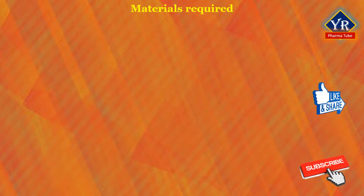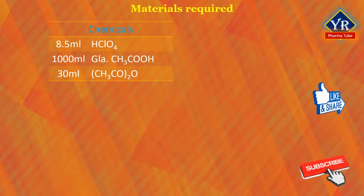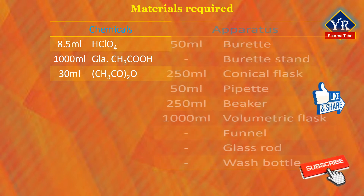The materials such as chemicals and apparatus required for the preparation and standardization of 0.1 molar perchloric acid include 8.5 ml of perchloric acid, 1 liter or 1000 ml of glacial acetic acid, and 30 ml of acetic anhydride.